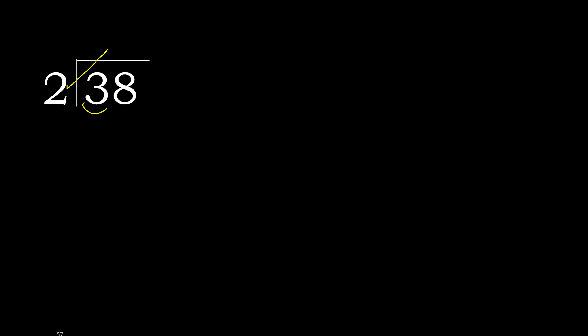2 multiplied by 2 is 4 — 4 is greater. 2 multiplied by 1 is 2, it's not greater. 3 minus 2 is 1.